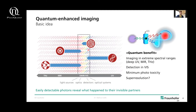The basic idea behind this is that you use correlated or entangled photon pairs. You have a nonlinear crystal, you pump it with a photon, and inside it can split into two partner photons. This photon pair can be non-degenerate, meaning they have different wavelengths. The idea is to have one of those photons in the wavelength range where you have good detector and optics technology, and the other partner photon in an extreme wavelength range — like deep UV, mid-infrared, or terahertz. You use this extreme-wavelength photon for interaction with the sample, and you use the partner photon in the visible for the actual detection on the camera.